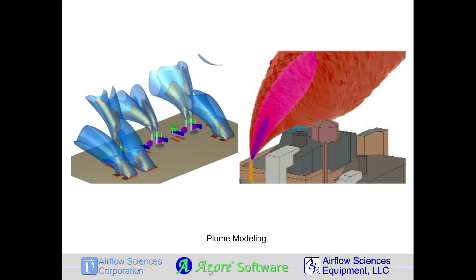Air quality dispersion modeling tracks gases and particulates emanating from stacks and vents. Plume behavior depends on many environmental variables, such as temperature, wind speed, and wind direction. Ensuring that the stack discharges avoid any air intakes is often part of a plume study analysis, as well as tracking combustible or toxic discharges.